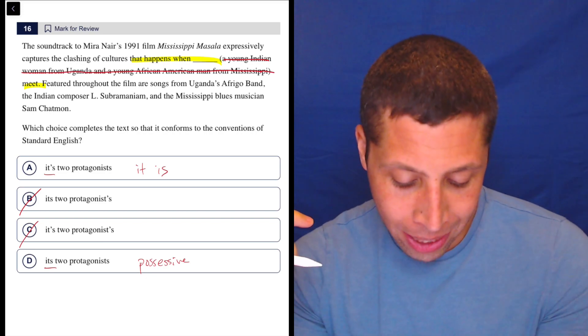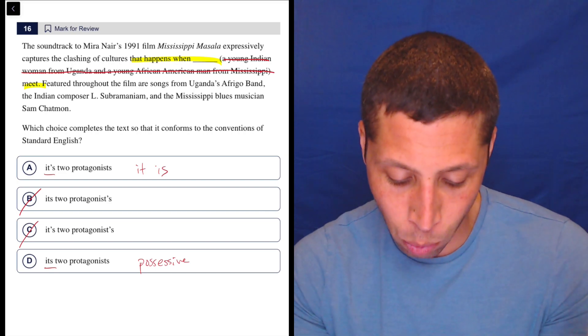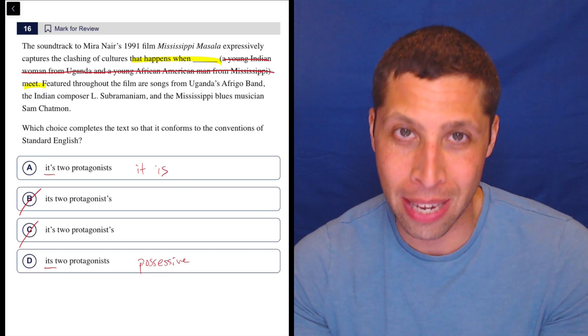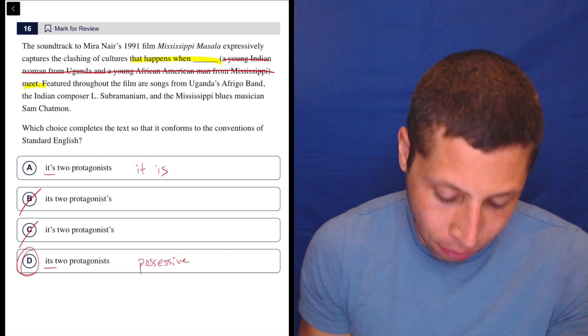So just now try to read A with the word it is. Does it sound right? That happens when it is two protagonists meet. No, obviously that's wrong. It's definitely D.